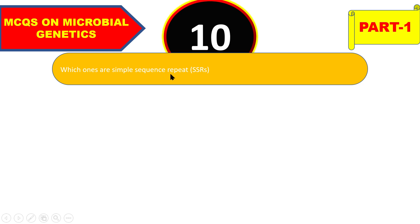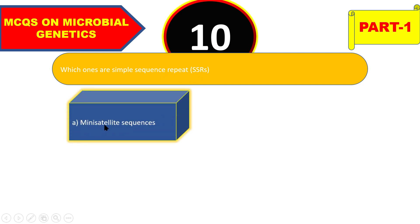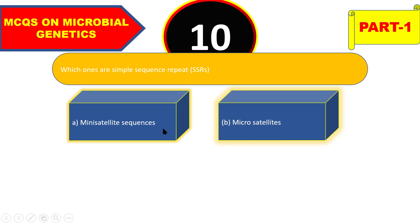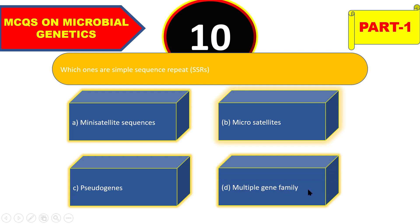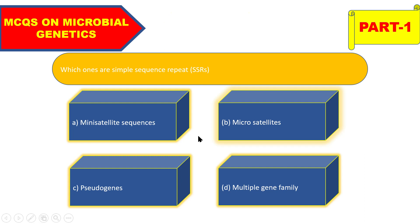Next question: which one are simple sequence repeats (SSRs) — mini-satellite sequences, microsatellites, pseudogenes, or multiple gene family? The right answer is microsatellites. Microsatellite is also known as simple sequence repeat (SSR).